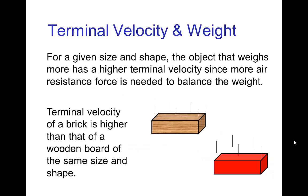Terminal velocity depends on various things. One of the obvious ones would be for given size and shape, the more that an object weighs, the higher the terminal velocity, because the more air resistance force we need to match that weight. So if we have a block of wood that's the same size and shape as a brick, the brick weighs more. And so when we drop the two, the terminal velocity for the wooden block is going to be slower than the terminal velocity for the brick, which will be higher.